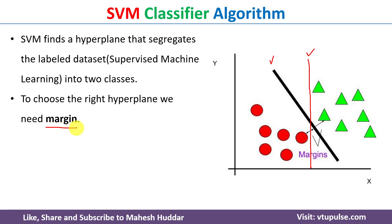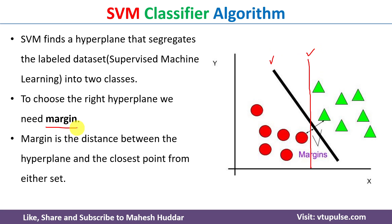For that reason we need to consider something known as the margin. Margin is the distance between the hyperplane and the closest point on either side. For example, if I consider the hyperplane drawn in black color, this is the nearest data point on one side and this is the nearest data point on the other side. We calculate the perpendicular distance on each side — this is called the margin. Let's say this margin is A.